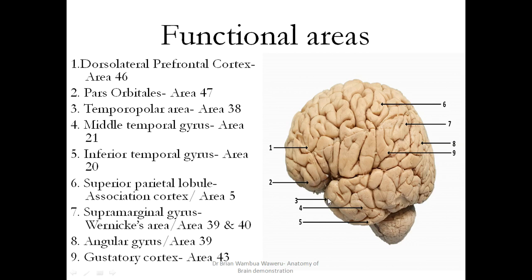Here you have the temporal polar area, or area 38, and this is the area that allows you to comprehend humor. Then you have Brodmann area 21, which is the middle temporal gyrus. Above is the superior temporal gyrus, and then you have the inferior temporal gyrus, or area 20.